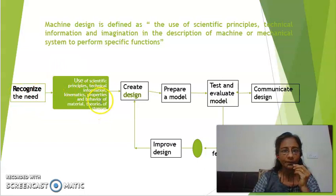Use of scientific principles, technical information. Technical information means if you want to have a transmission system, then what all kilowatts power it is going to transmit, how much is the RPM. So all this is known as technical information. Kinematics means which mechanism we are going to use to serve this purpose. Then we know mechanical engineering materials from our base. So study of that. Using all these principles, we need to create a design.